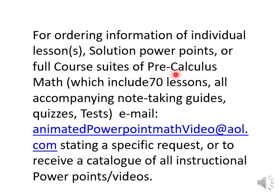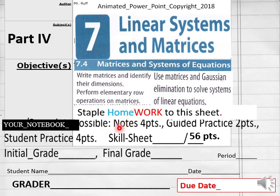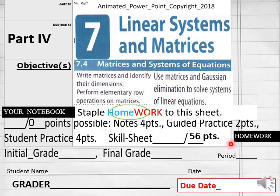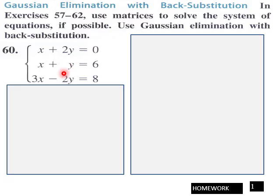Hello everybody, getting ready to do lesson 7.4 part 4 homework for precalculus math today. For today's homework you got 56 points on this homework sheet part 4. Students, make sure you have part 4, 7.4 homework page 1.